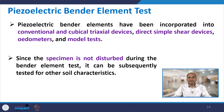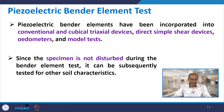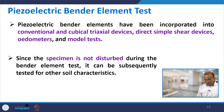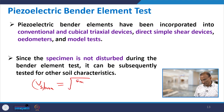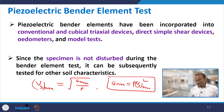Bender elements have been incorporated into conventional and cubical triaxial devices, direct simple shear devices, oedometers, and modal test setups. Importantly, the specimen is not disturbed during bender element testing and can be subsequently tested for other soil characteristics. The most important application is finding V_s_max (maximum shear velocity), which gives G_max = rho × V_s_max². Because it is a very low strain test, it is used specifically to find the maximum shear modulus.